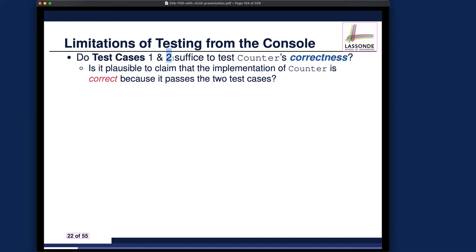Here's a question: if you consider test cases one and two alone, are they sufficient for testing the counter's correctness? Can you actually claim the implementation is correct just because you pass console test one and console test two? Intuitively, the answer should be no. For example, we haven't tested whether incrementing the counter one time and two times goes from zero to one and then to two, with no premature exceptions thrown beforehand.